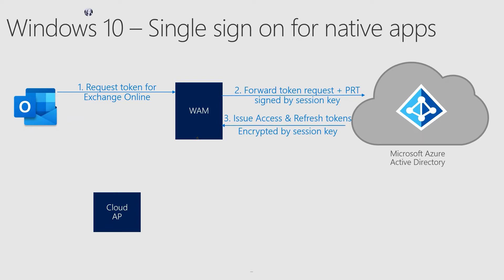These tokens are encrypted by the session key to prevent unauthorized applications from gaining access. As these tokens are encrypted, WAM sends a request to Cloud AP to decrypt them before it can pass them on to Outlook. Cloud AP now invokes the TPM to decrypt the tokens and issues them back to WAM. And finally, WAM passes the access tokens back to Outlook so that it can silently and seamlessly deliver email.